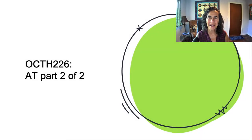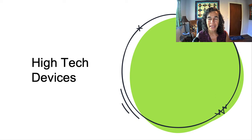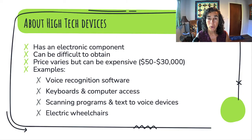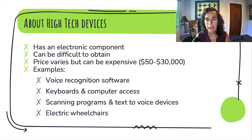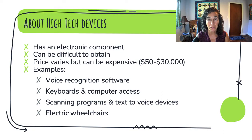Welcome back to assistive technology, part two of two. In this part of the video, we're going to look at high-tech devices. High-tech devices are characterized by having an electronic component — that component can be a little motor all the way up to super sophisticated computer technology.